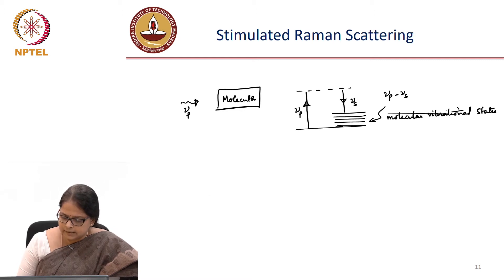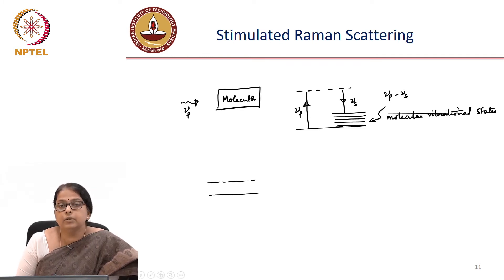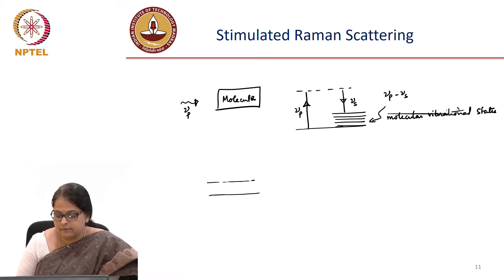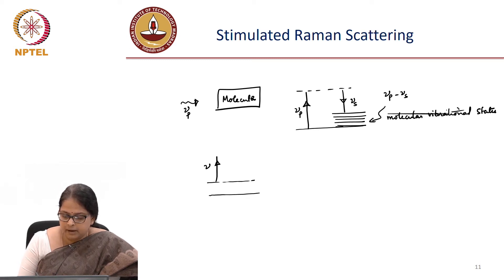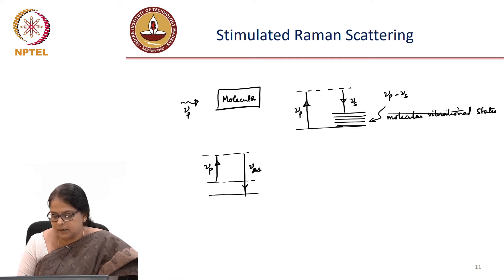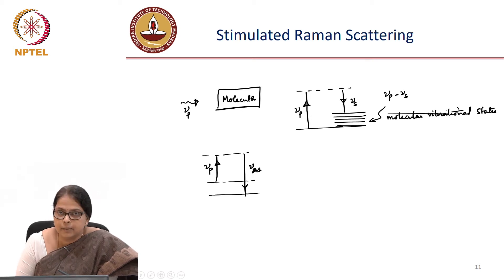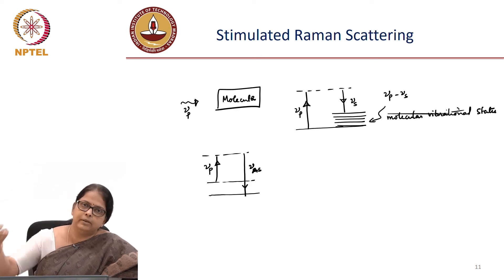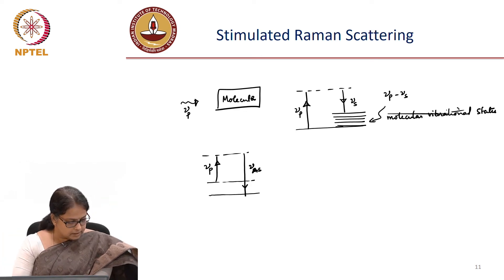There is also a chance that the atom is already in the excited state — the molecules are already in the excited state because of some thermal vibrations in the system. Then it could absorb the pump photon and you could generate an anti-Stokes photon whose energy is larger than the incident pump photon, because the molecular vibrations have actually given energy to the pump photon. Both these processes are possible.